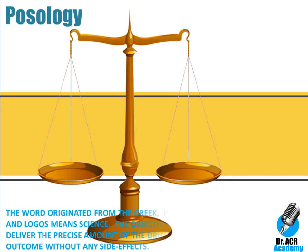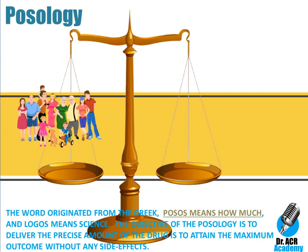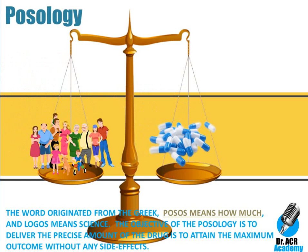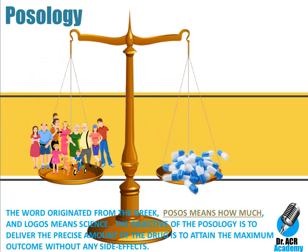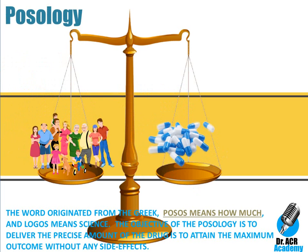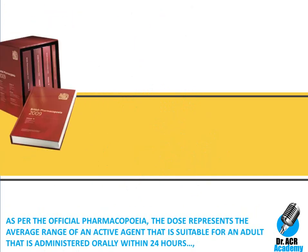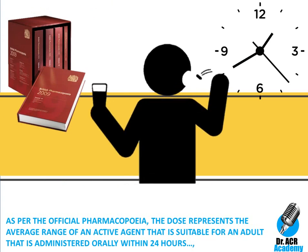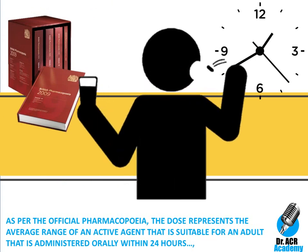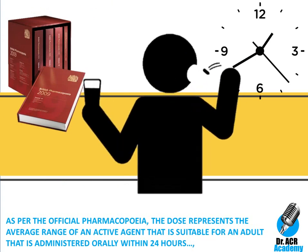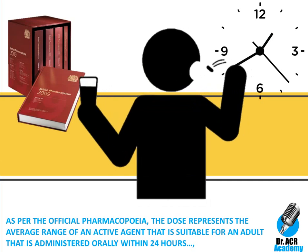The word originated from the Greek: 'posos' means how much and 'logos' means science. The objective of pathology is to deliver the precise amount of the drug to attain the maximum outcome without any side effects. As per the official pharmacopeia, the dose represents the average range of an active agent that is suitable for an adult, administered orally within 24 hours.